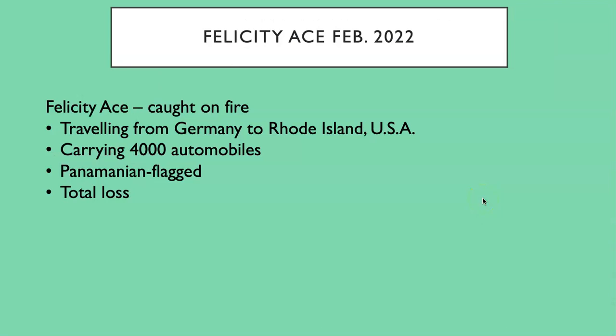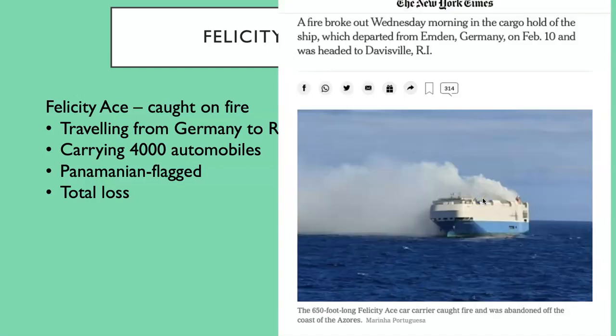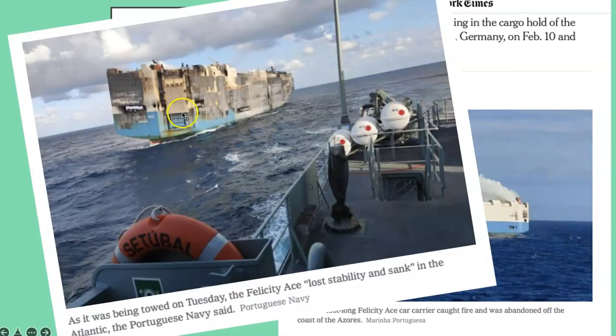More recently, a ship called the Felicity Ace — which didn't hit high seas but caught on fire in February 2022 — was on its way to Rhode Island with 4,000 automobiles, many of which were luxury automobiles, and this was a total loss. Here's the ship when it caught on fire on February 10th. Eventually, as they tried to tow it in, the whole ship tipped over, lost stability, and sank.